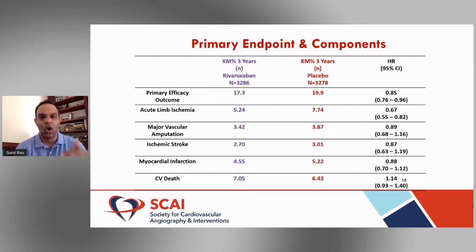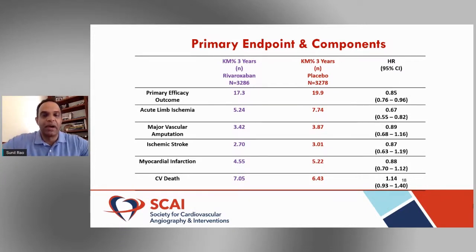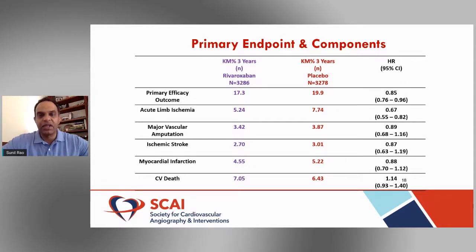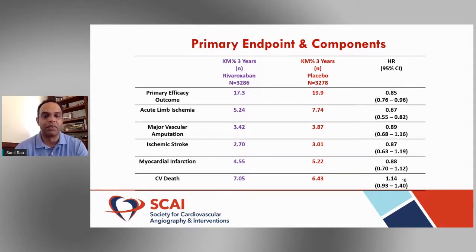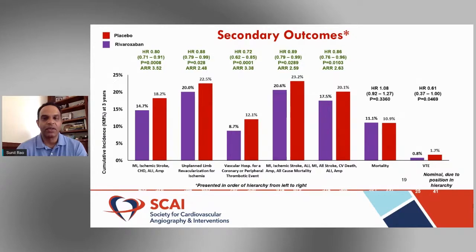Almost all components of the primary endpoint directionally favored rivaroxaban therapy, with the exception of cardiovascular death, which did not reach statistical significance — the trial was not powered for that. The major components of this composite endpoint do show a benefit. The death signal is interesting and directionally favored placebo — it'll be worth investigating whether that's a real signal or noise.